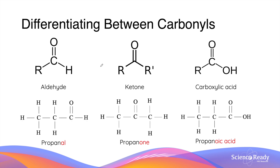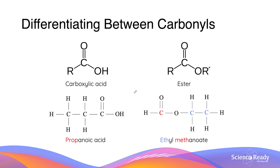With the introduction of esters, we have explored four different functional groups that contain the carbonyl group. The three others are aldehydes, ketones, and carboxylic acids. In an aldehyde, the carbonyl carbon is bonded to a carbon atom and a terminal hydrogen atom. In the ketone functional group, the carbonyl group is between two adjacent carbon atoms. For the carboxylic acid functional group, the carbonyl group is between a carbon atom and an oxygen with a proton attached to it. The structures of carboxylic acids and esters are quite similar — importantly, the oxygen atom in the carboxylic acid functional group is bonded to a proton, which is the reason why it is acidic. In contrast, in an ester the oxygen atom is bonded to another carbon atom, as you can see here.